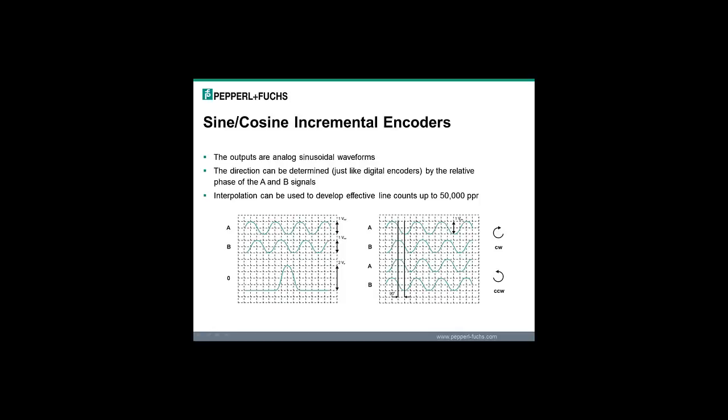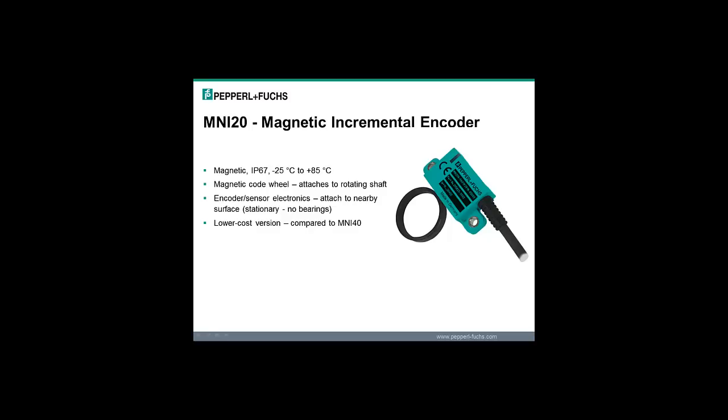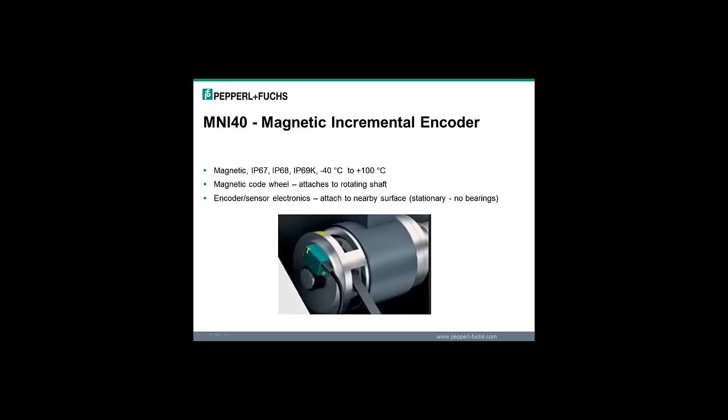The MNI-20 has two parts, the magnetic code wheel and the magneto-resistive sensor. It has no bearings or moving parts, so it has a very long service life. The MNI-20 is a lower cost version compared to MNI-40. The MNI-40 also has two parts, the magnetic code wheel and the magneto-resistive sensor. It has no bearings or moving parts, so it has a very long service life. Compared to the MNI-20, the MNI-40 has a higher temperature range, higher environmental rating, and a two-color LED to provide a clear indication of the magnetic wheel alignment and diagnostics.